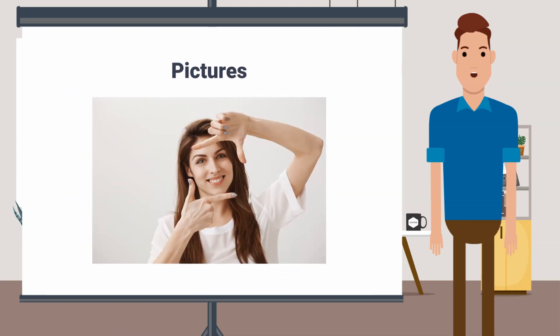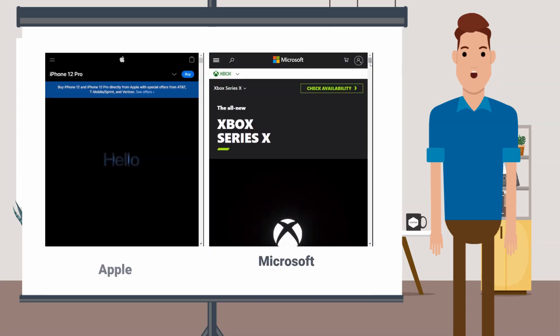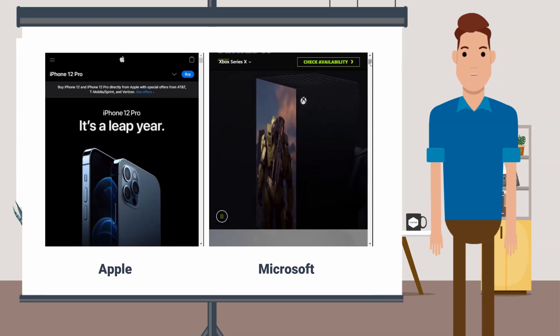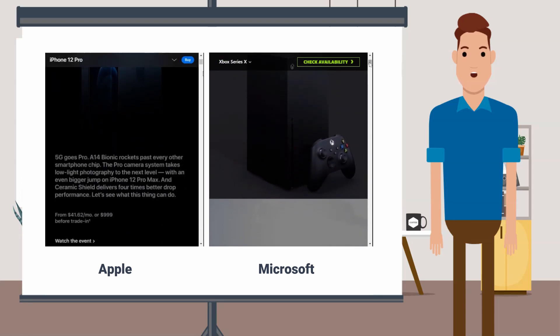The next one is pictures. Pictures always tell a better story than words. And companies like Apple and Microsoft know it better. Use relevant and good quality pictures. It will automatically increase your website's aesthetics.